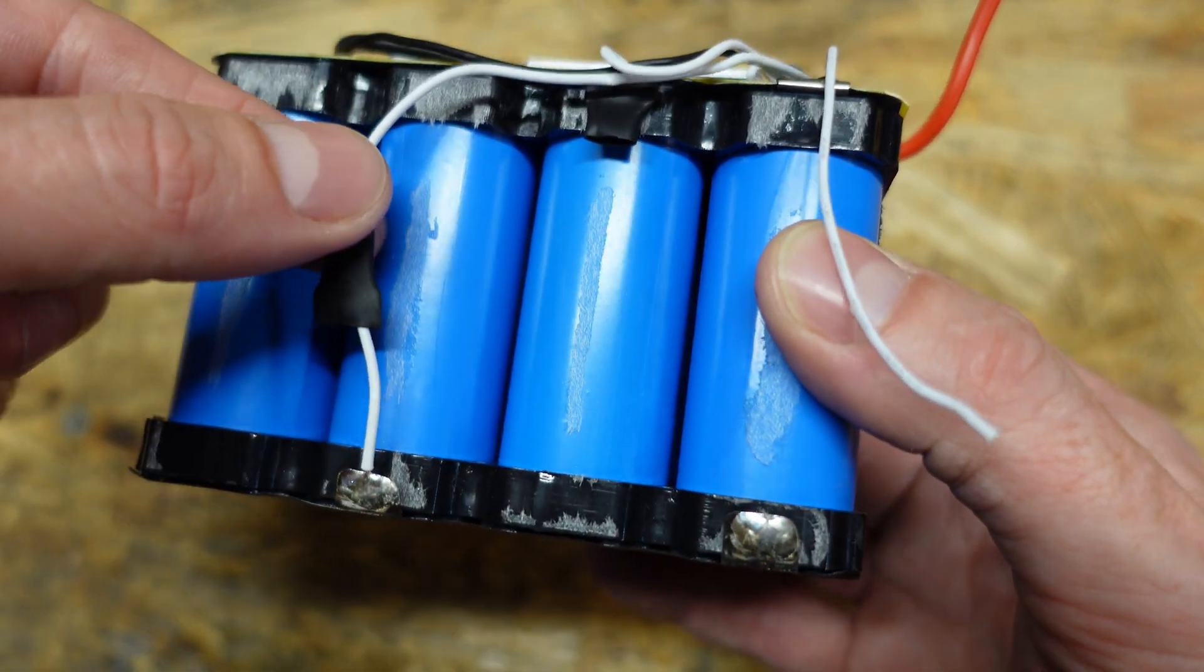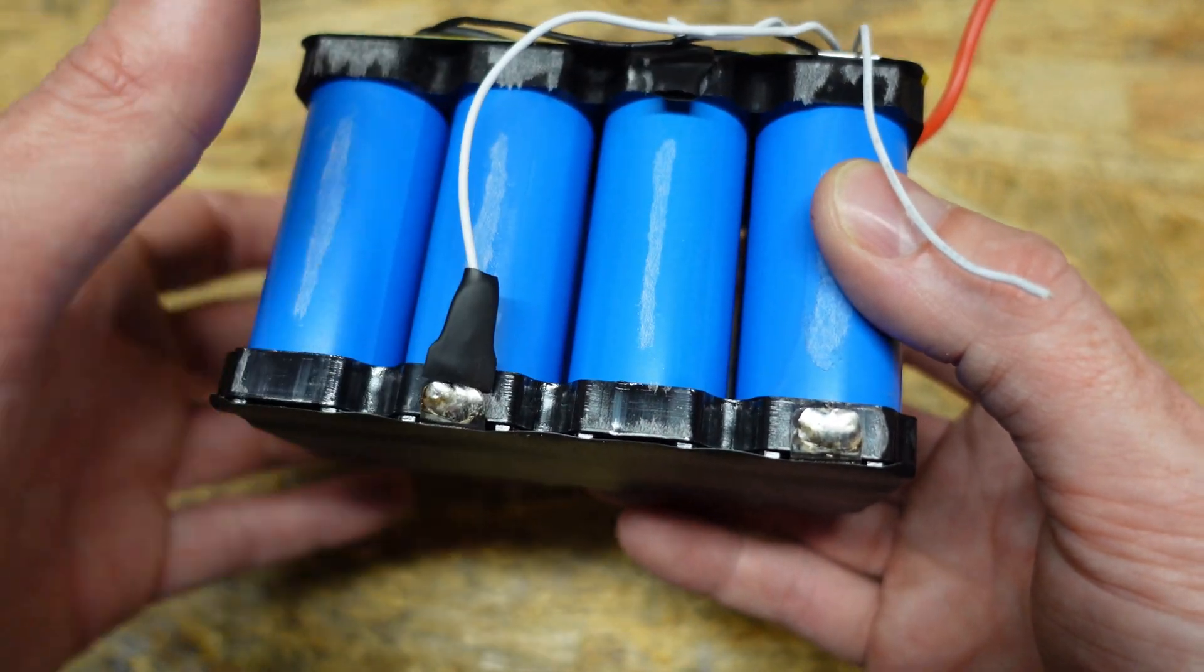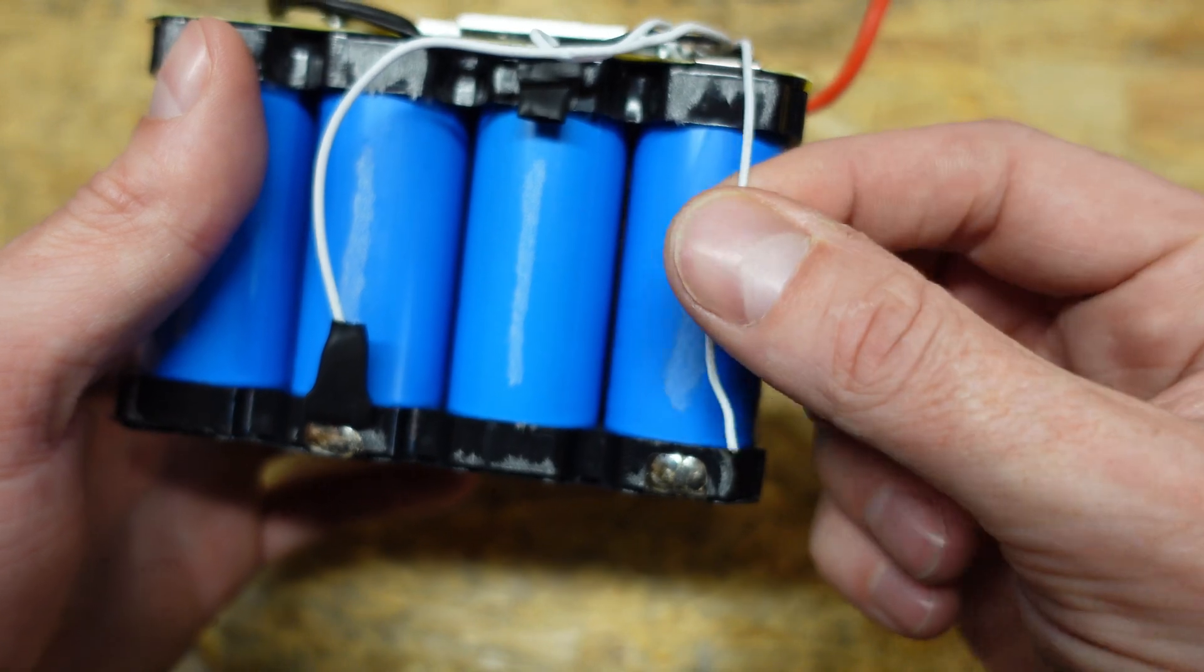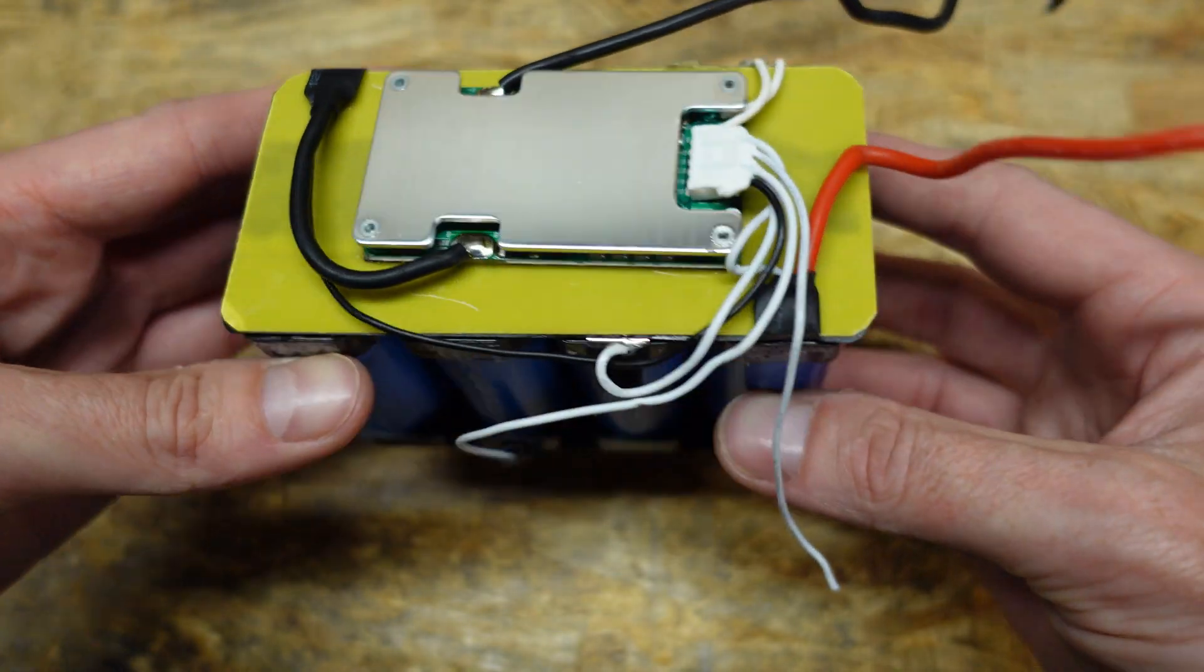The heat shrink is a bit loose. You can see this one's not even really shrunk on. And this wire did come off as I was pulling it apart. So that was my fault.